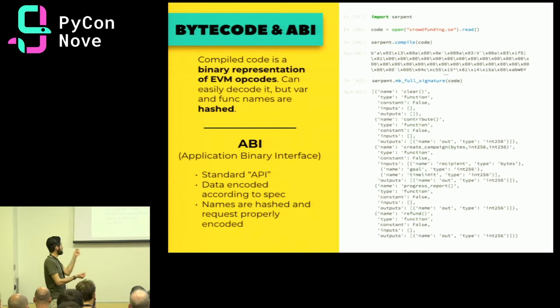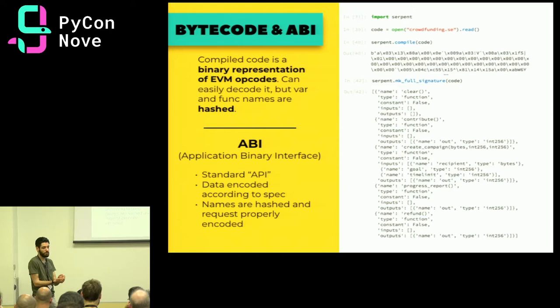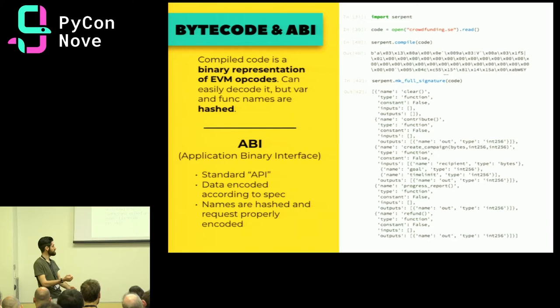This is where the ABI comes into play. The ABI is a standard way to define the interface of contracts, and you need it to call any function of any contract on the blockchain. If you deploy a contract and then lose the ABI, you won't be able to call any function of that contract, because in order to send the transaction, the function name has to be hashed with respect to the signature of the contract.